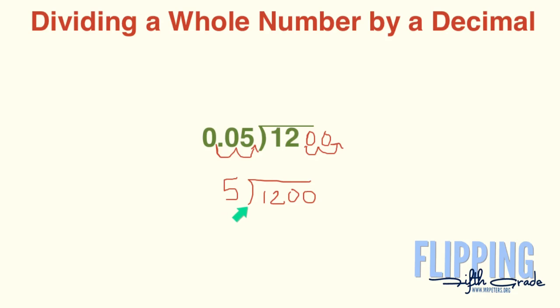So now our problem, instead of 12 divided by 0.05, is now 1200 divided by five. So now we can do that problem. Does five go into one? No. Does five go into twelve? Yes, it goes in two times. Two times five is ten, subtract, drop the zero.